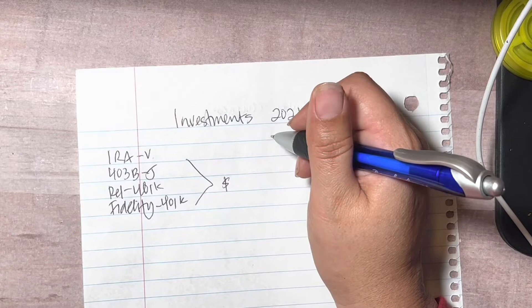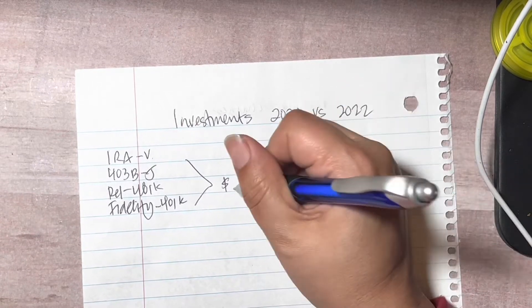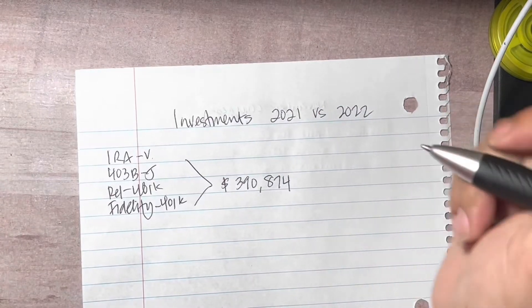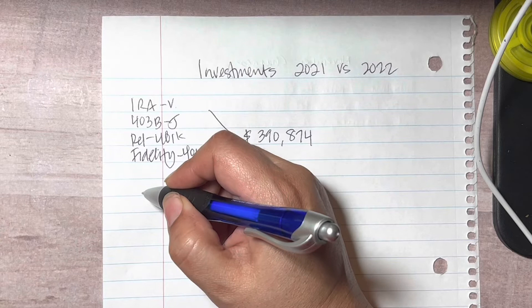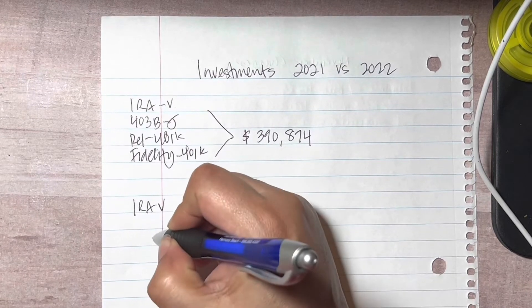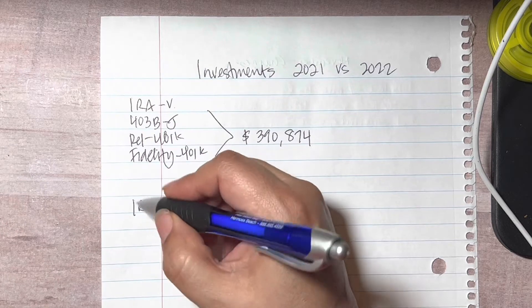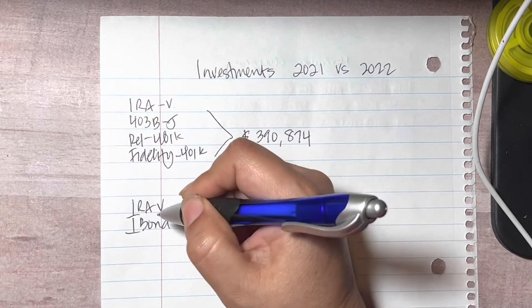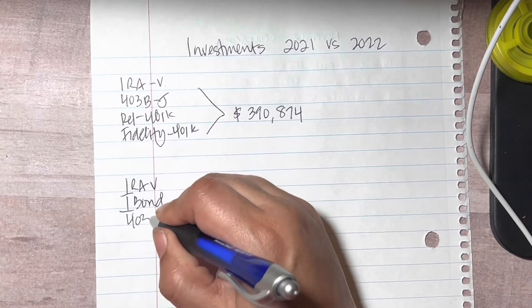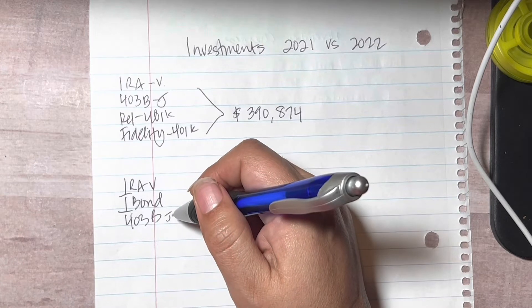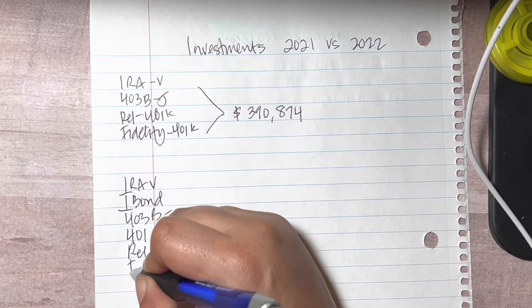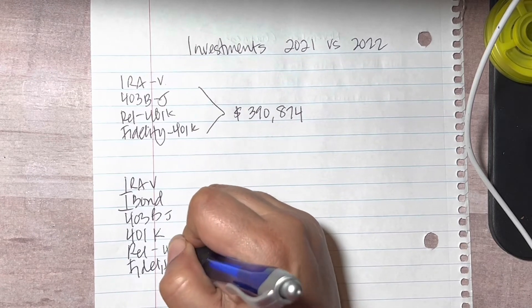Now this year I have added to - so I still have my IRA, right. We also did an I bond because I follow Mommy Trader and I followed her directions, so easy. Jim's 403b, Jim, and then my 401k at my current job, and the other ones that I still need to transfer. These are old 401ks.